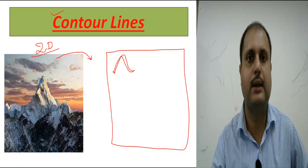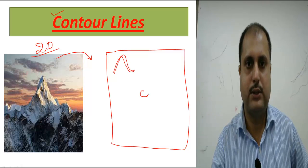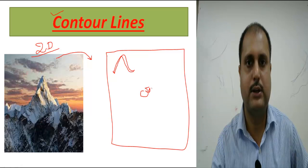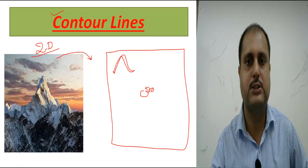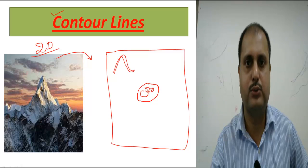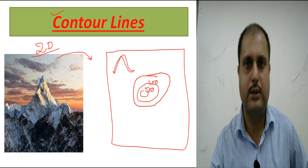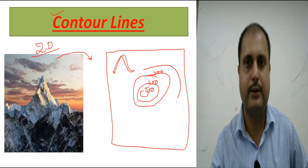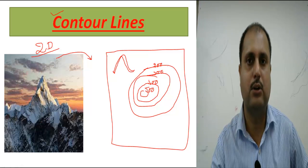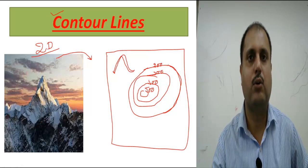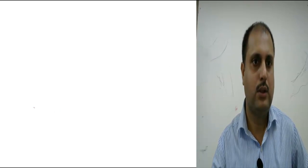We use contour lines to show elevated areas on the map. For example, the height of one area is 500 meters, another is 400 meters, another is 300 meters, and another is 200 meters. Each line belongs to the same height throughout its area, so we indicate the height of an area using contour lines.